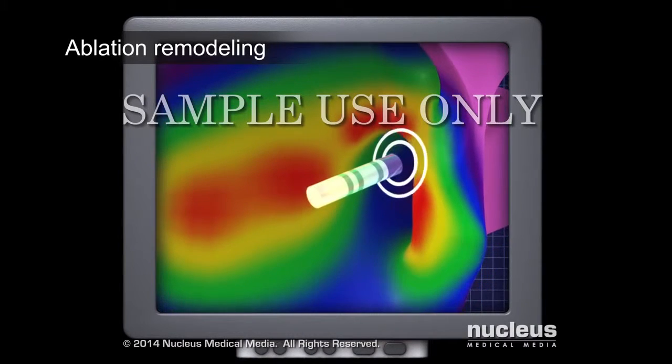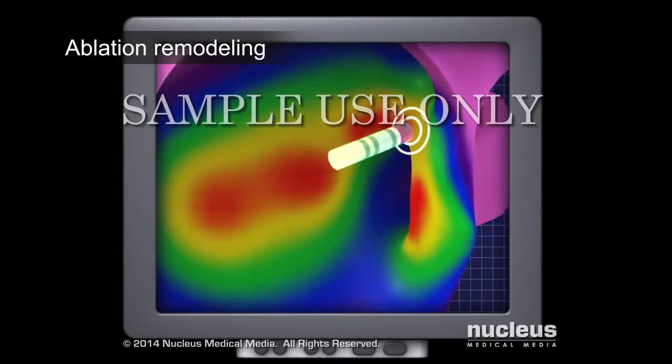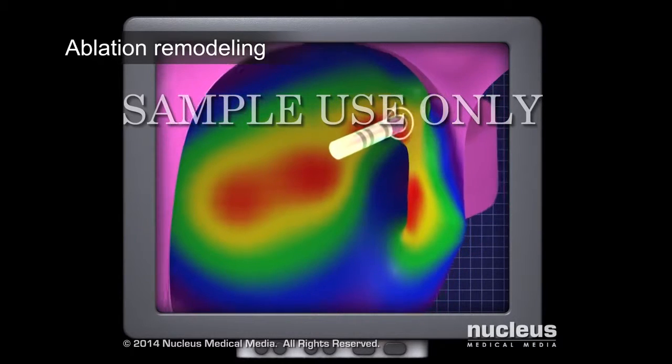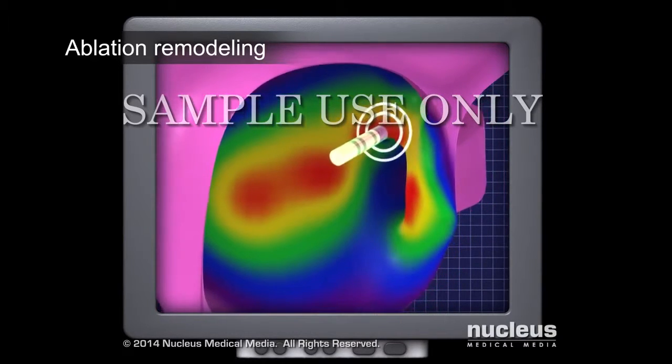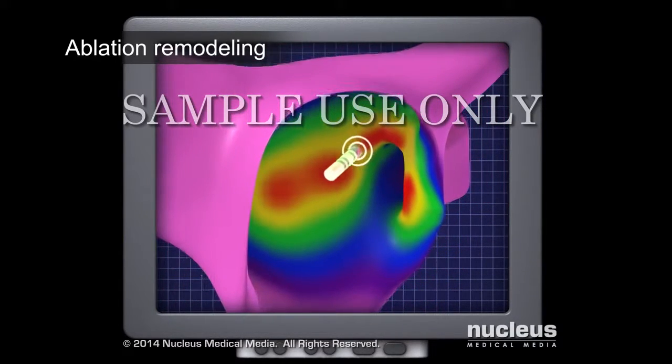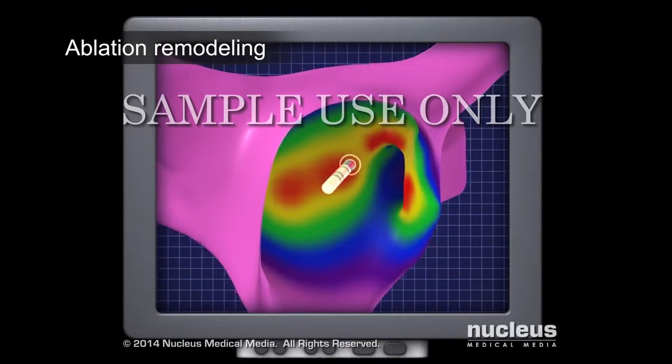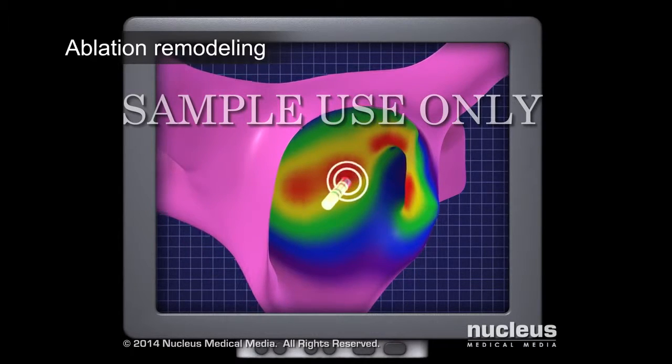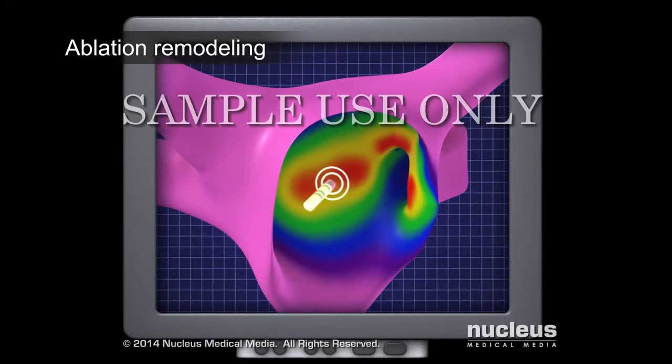Or, if the affected tissues are larger areas with more complex rhythm disturbances, the doctor may perform a procedure called ablation remodeling.